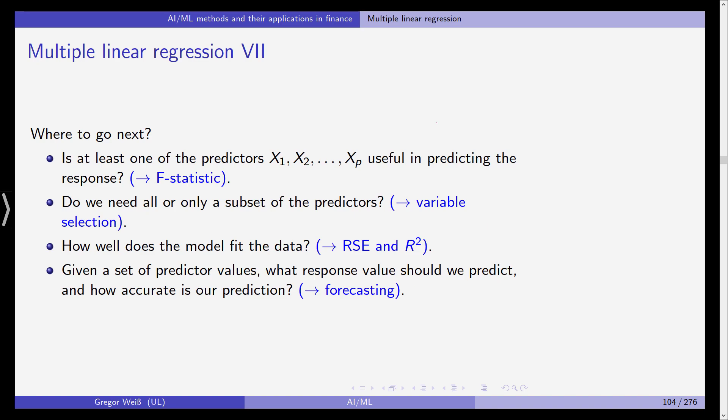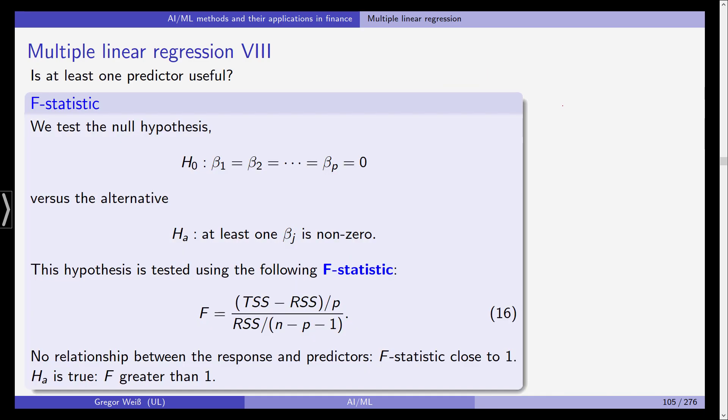And last but not least, given a set of predictor values, what response value should we predict? And how accurate is our prediction? So we are back to forecasting, which would mean that, for example, if you have a line, if for example in the one-dimensional case we have these observations and we've estimated a regression line, for example you would know that if this is the estimated regression line and we get a new X value which is here, for example, then this would be the predicted and forecasted value. Or if we forecast this, probably here, because this is the extension of the linear line.